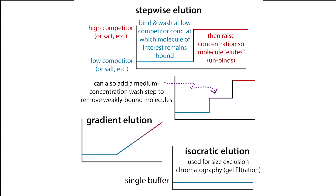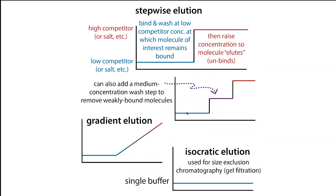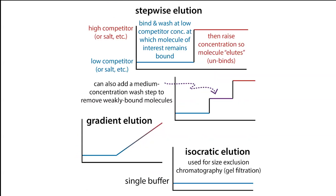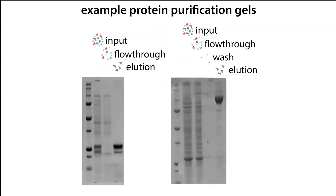In an isocratic elution, we use a single buffer. In a stepwise or gradient elution, we use at least two buffers — going from low to high concentration of competitor, salt, or changing pH. With stepwise, you go from one condition straight to another, and you can add a medium step to isolate mediumly bound molecules. If you're unsure where the protein will come off and have access to an AKTA where you can easily mix concentrations, you can do a gradient. In all these cases, we call it an elution when the protein comes off the column; technically the material that comes off is the eluate, but we often just say elution.